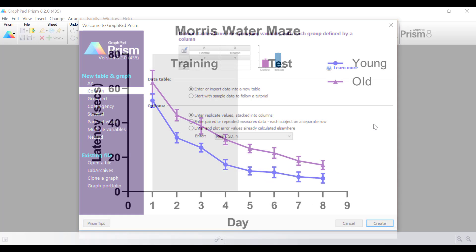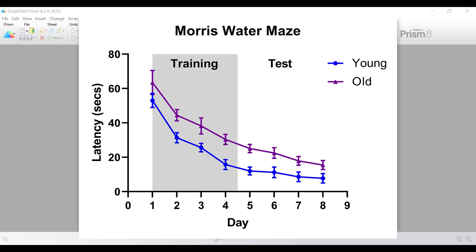In this video tutorial I will show you how to create this line graph. Specifically, this data is from a Morris Water Maze Assessment, which is a memory test in a set of young and old rats. The rats are tested in a water maze and the time taken to find a hidden platform is recorded. The rats are then tested over 8 days.